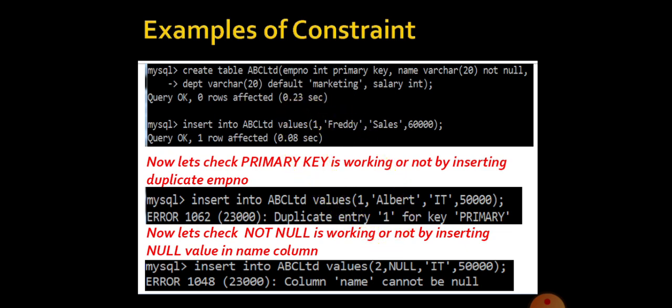Trying the next one. Now let us check not null is working or not by inserting null value in a name column. As we all know, name having a constraint as not null. That means in the name column, the user must not enter any null.